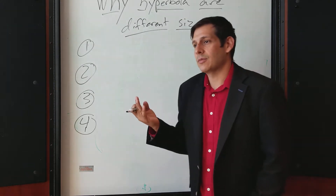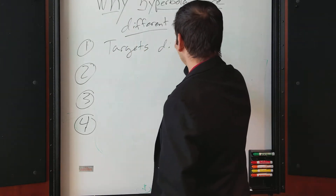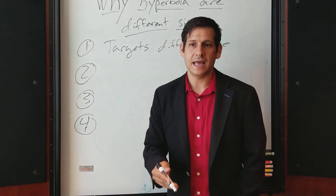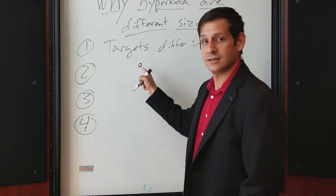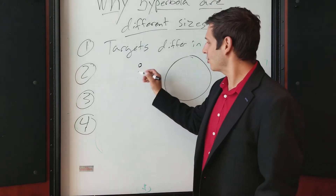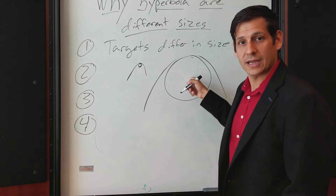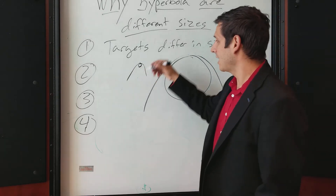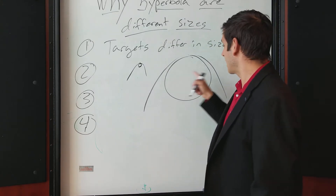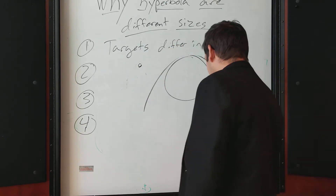Number one, which is certainly the most common or easiest to understand, is that your targets differ in size. If you have a tree root, maybe it's a small size, or if you have a pipe that's larger, a smaller hyperbola will be produced on the tree root than on the larger pipe. So the size of the target will in part determine the size of the hyperbola.